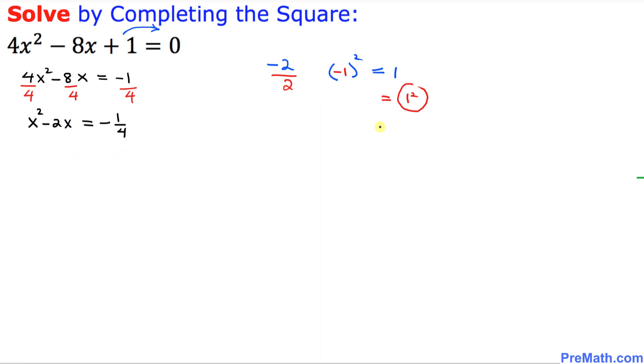So this is the quantity that I will add on both sides of this equation. So let's add that quantity. So I am going to write down x square minus 2x plus equal to negative 1 over 4 plus. And now I am going to add this quantity on both sides. One square on this side and one square on this side.